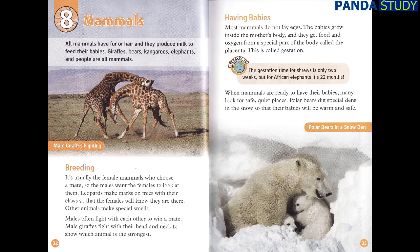Mammals Breeding. It's usually the female mammals who choose a mate, so the males want the females to look at them. Leopards make marks on trees with their claws so that the females will know they are there. Other animals make special smells. Males often fight with each other to win a mate. Male giraffes fight with their head and neck to show which animal is the strongest.